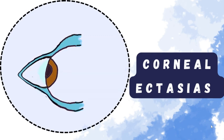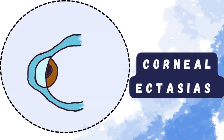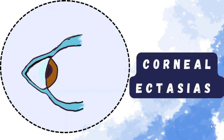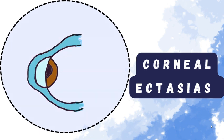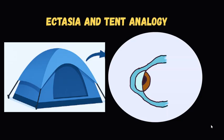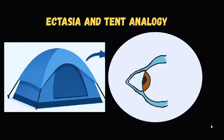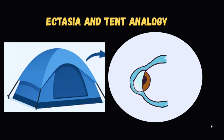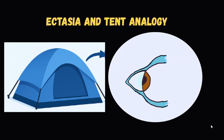Have you ever wondered why some corneas start to thin and bulge like a cone? That's ectasia, a condition that can change vision forever. In this video we will break down what ectasia is, how it is classified, and what actually causes it at the microscopic level. Let's imagine the cornea normally as a strong transparent dome — like the roof of a tent — that slowly starts to lose its strength, sag, thin out, and bulge outward.